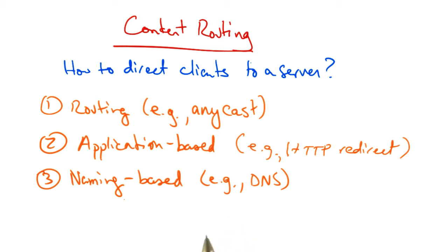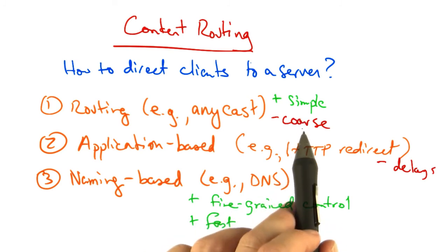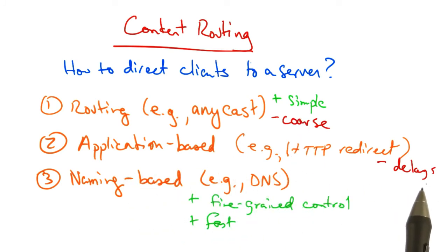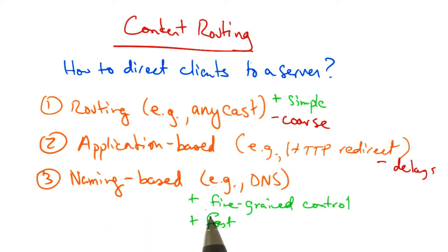Naming-based redirection provides significant flexibility in directing different clients to different server replicas. So in summary: routing-based redirection is simple but very coarse; application-based routing is also fairly simple but it incurs significant delays, which operators and users really care about.